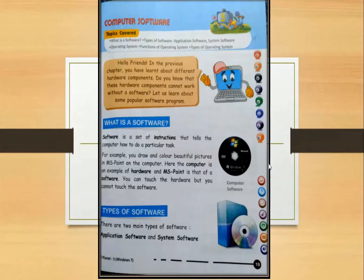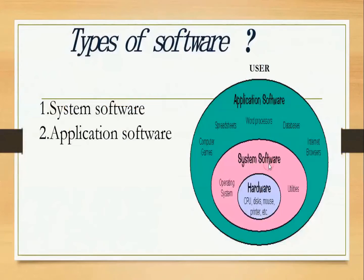Types of software — there are two main types of software: Application software and System software. Now in this diagram we can see different colored circles. In the previous page, we have read about the different types of software — that is System software and Application software.